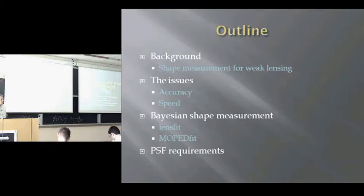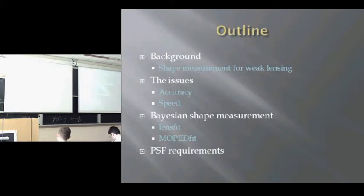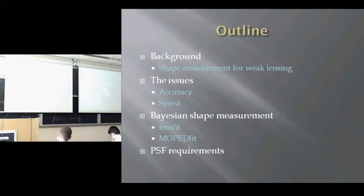I'll bring you up to date with some recent developments in approaching shear measurement from a Bayesian point of view. I'll talk about background on shape measurement, echoing some of what Gary said about the requirements for weak lensing, looking at issues about accuracy but also speed — the lensing surveys are going to have of the order of ten to the nine objects whose shapes need to be measured.